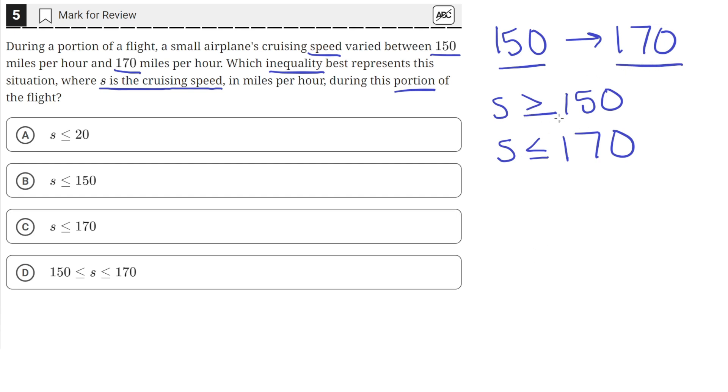So we have these two inequalities for the cruising speed S of the plane, and we can combine them by writing it like this. So S in the middle, and this S was always greater than or equal to 150, but less than or equal to 170. And that's answer choice D.